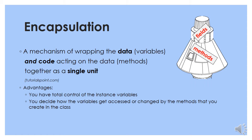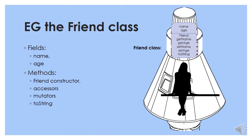Encapsulation is an important word. I've put a picture of a space capsule here. Basically it means the mechanism of wrapping the data or variables and the code acting on the data or methods together as a single unit. So the fields and methods of the object are wrapped up inside the object. The advantages of encapsulation are that you have total control of the instance variables, and you decide how the variables get accessed or changed by the methods you create in the class. In the Friend class example, the fields are name and age, and the methods are the constructor, accessors, mutators, and toString — all encapsulated within the Friend class.